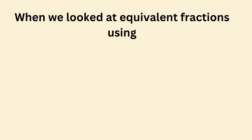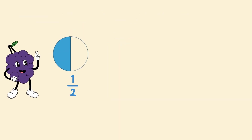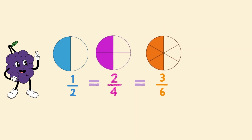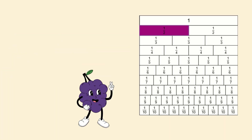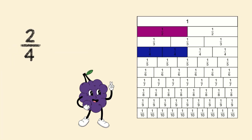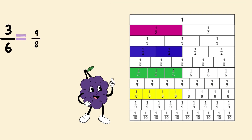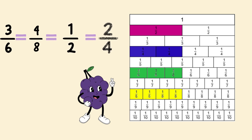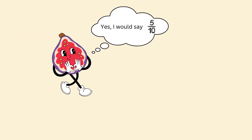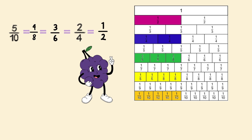When we looked at equivalent fractions using the circle, we discovered that one-half is the same amount as two-quarters, three-sixths, and four-eighths. Let's see if that's also true on this fraction wall. Here is one-half. Here are two-quarters — they both share the same amount as one-half. Notice three-sixths and four-eighths are also equivalent to one-half and two-quarters on the fraction wall. There is one more equivalent fraction to one-half on the fraction wall. Can you identify this fraction? I would say five-tenths. Brilliant — five-tenths is equivalent to the other four fractions we identified, since they all represent the same value.